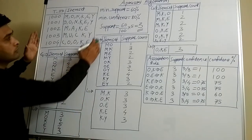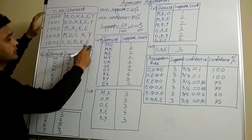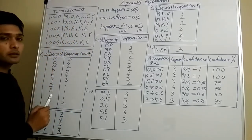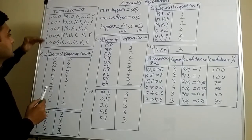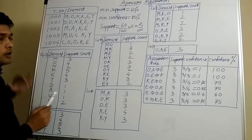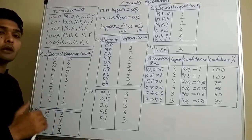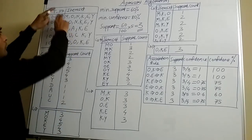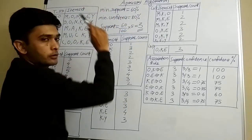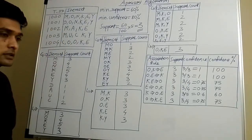What we will do is learn the Apriori algorithm using a particular example. Just assume that these letters are the items and this is the data we have. We have five records. Ultimately, what we are going to do is derive some rules for this particular data by using the Apriori algorithm.